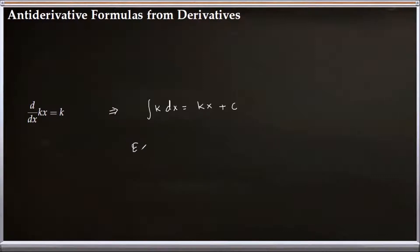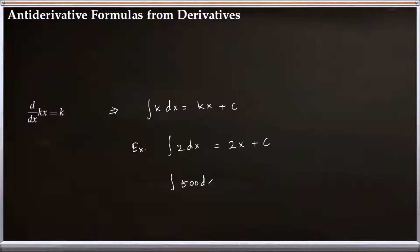For example, the antiderivative of 2 with respect to x is 2x plus C. Similarly, the antiderivative of 500 dx is 500x plus C. The same idea applies to any constant k.